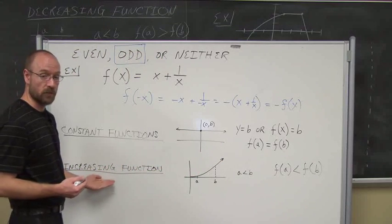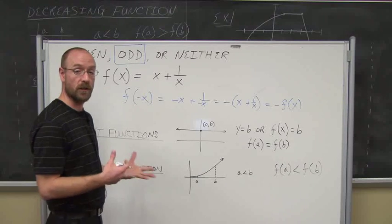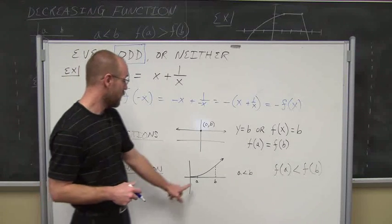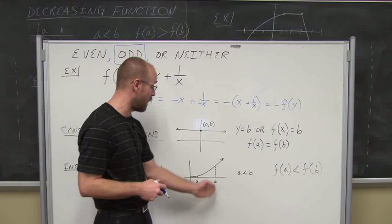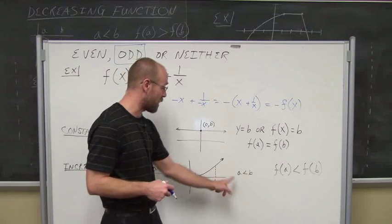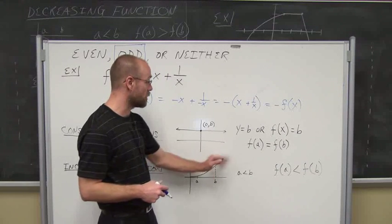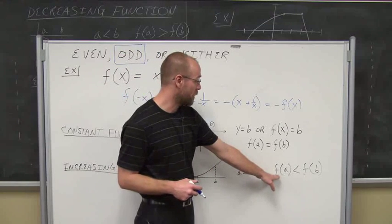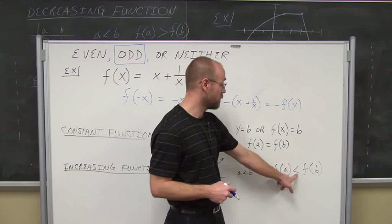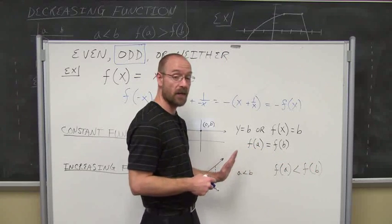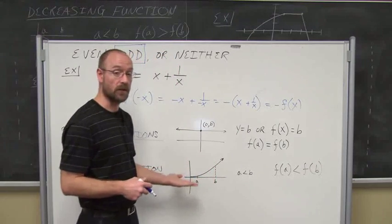An increasing function: when we look at different functions and curves, sometimes they go up and sometimes they go down. We want to determine if the function is increasing or decreasing over some interval. Looking from left to right from x equals a to x equals b — as we move left to right, y is increasing. If we evaluate the function at some value of x and the next value to the right is larger, then the function is increasing in y over that interval.